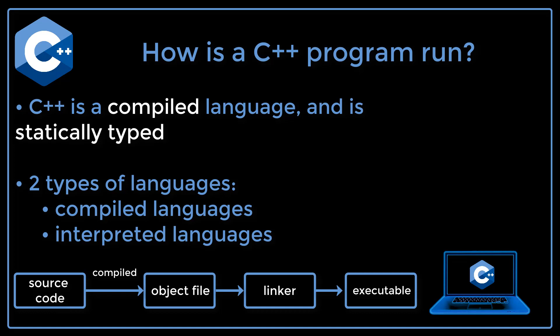Statically typed means that C++ variables are of a specific type. If you've ever written Python code, you may be familiar with the concept of being able to assign a variable any value in the program. For example, a variable holding an integer could later hold a bool, etc. For this reason we call Python a dynamically typed language. C++ in contrast is statically typed.